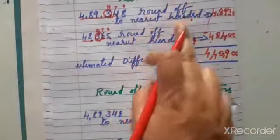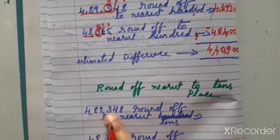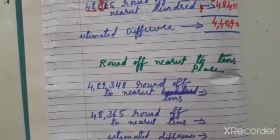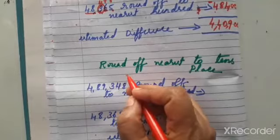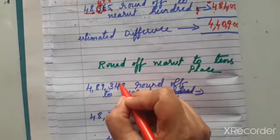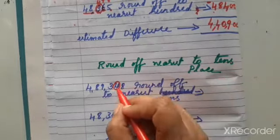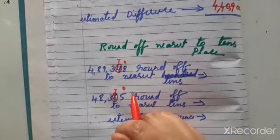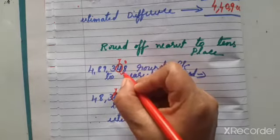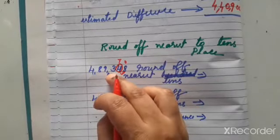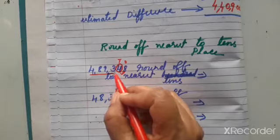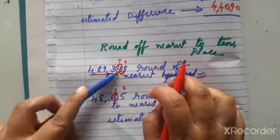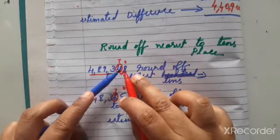Next is round off nearest to tens place — hundred place is done. Now round off 4,89,348 to nearest tens and 48,365 to nearest tens, then find the estimated difference. First step: check the place value — tens place we have to round off. Knock the door — neighbor is eight, a rich person. He gives one here, so this number will become five and after numbers become zero. Four, eight, nine, three as it is. One is added: four becomes five, helper becomes zero.